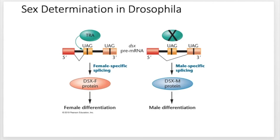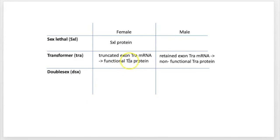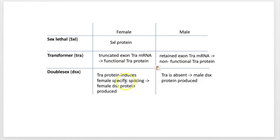That's based on differential transcription and differential splicing — all the things we've been talking about pulled together to explain how Drosophila sex is determined. Finishing up our table: the TRA protein induces female-specific splicing, which produces the female DSX protein. In the male, TRA is absent, so you don't get female-specific splicing, and you produce the male DSX protein. This is what produces a female versus a male Drosophila fly.